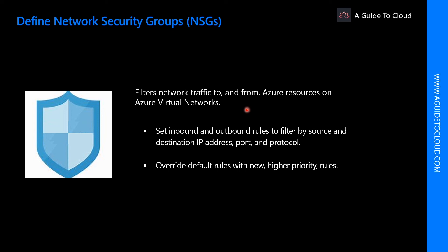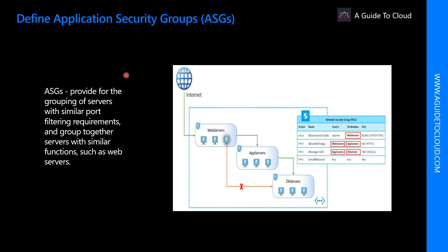Application Security Groups enable you to configure network security as a natural extension of an application structure, allowing you to group virtual machines and define network security policies based on those groups. This feature allows you to reuse your security policy at scale without manual maintenance of explicit IP addresses. The platform handles the complexity of explicit IP addresses and multiple rule sets, allowing you to focus on your business logic.